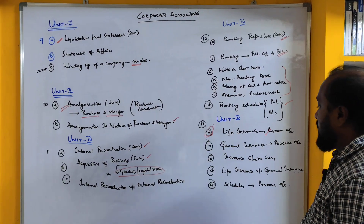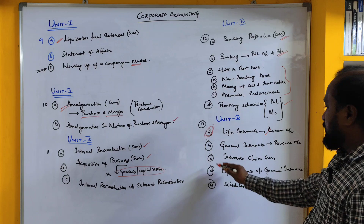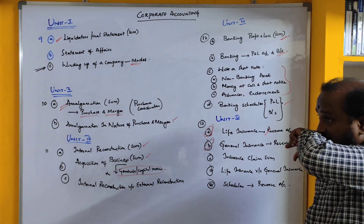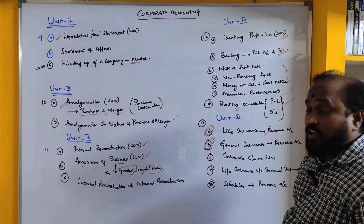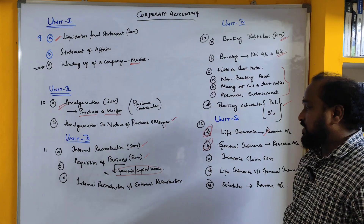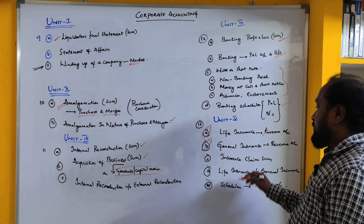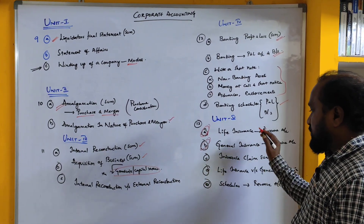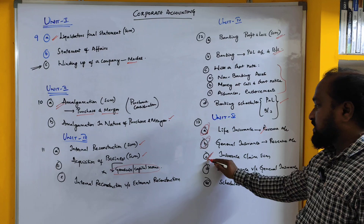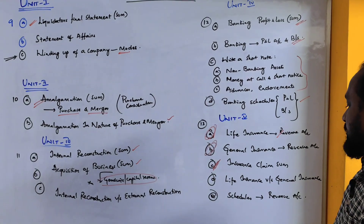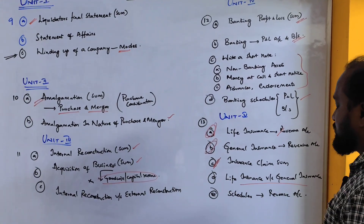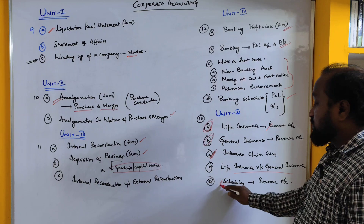For general insurance, if you are lucky then general insurance may come, but focus on life insurance. Insurance claim combination questions may appear for life insurance and general insurance. Prepare the relevant schedules for insurance as well.